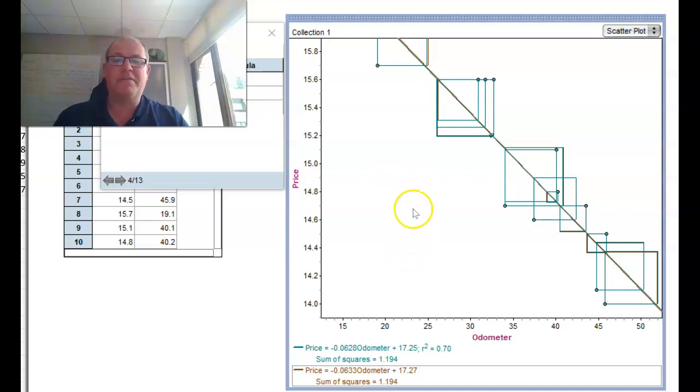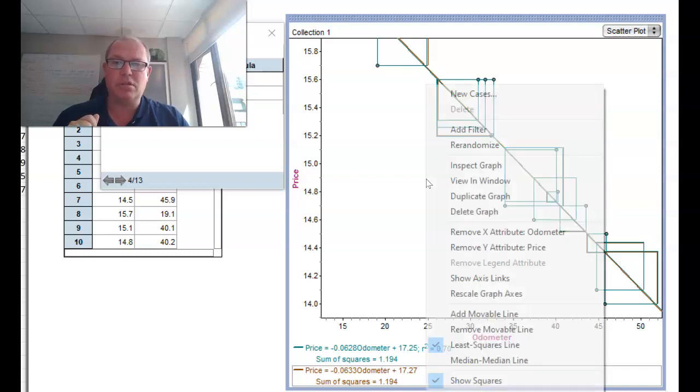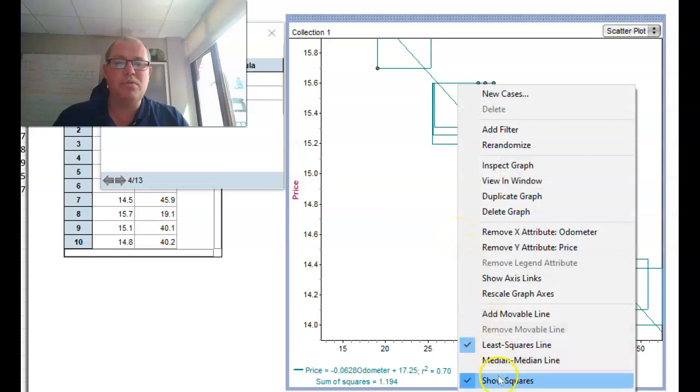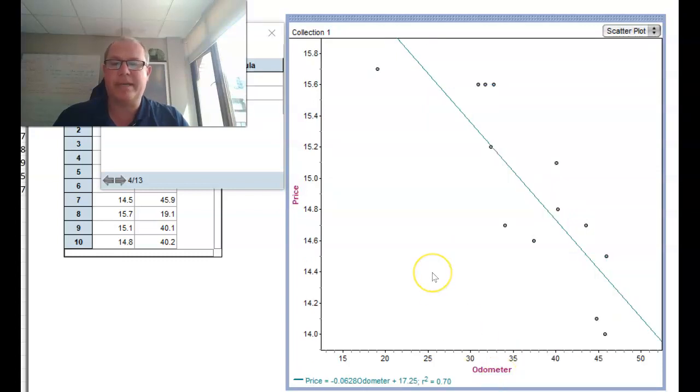Now we've got the very best line we can remove the movable lines. I want you to make sure you've got the least squares line, you've compared it to yours, and then you can remove the movable line and you can also remove the squares as well and you're just left with the least squares line. I'll pause the video for you to do that. Just to remind you again, add the least squares line, compare it to yours, how close were you, and then remove the movable line and remove the squares so you've just got the very best least squares line showing.